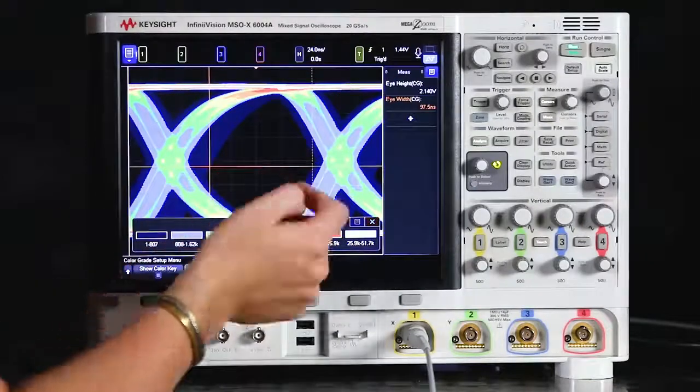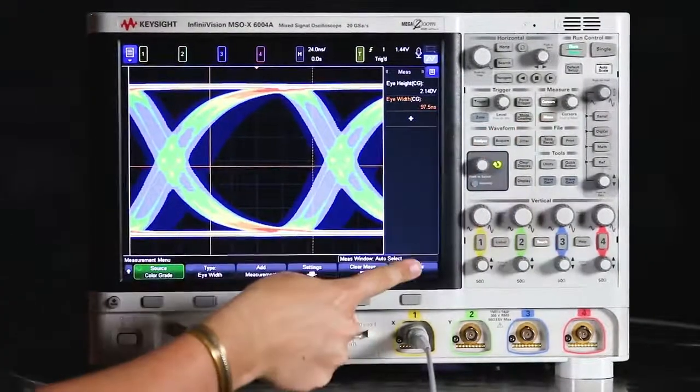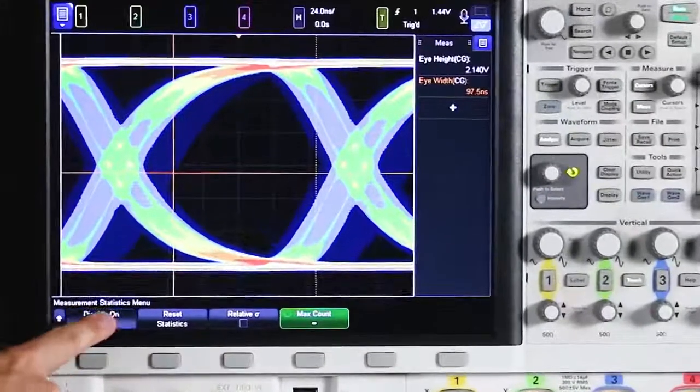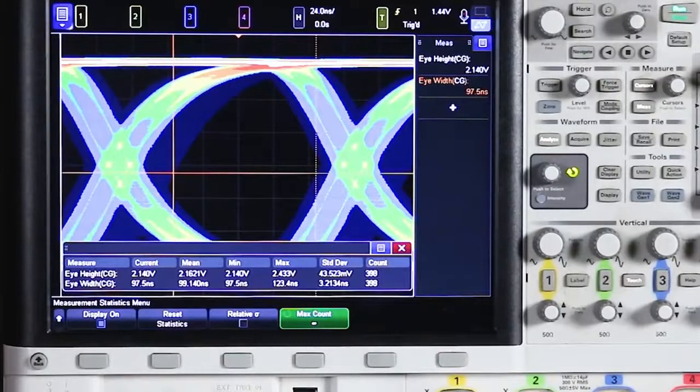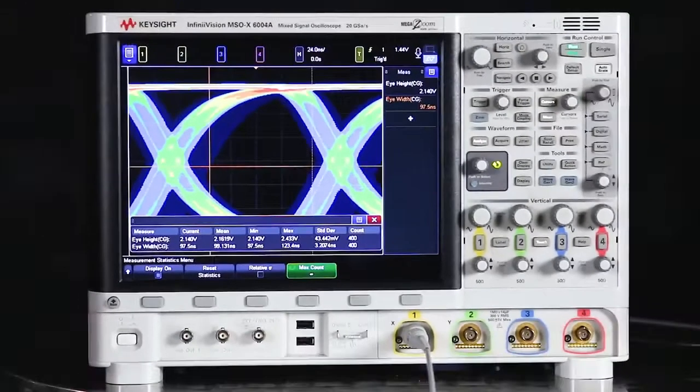And we can take a look at the statistics of those in the measurements menu by turning on the statistics display and we can see the mean of those measurements. So this is going to give us a better understanding of what's happening on average in this signal.